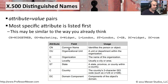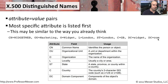For example: common name (CN) is WidgetWeb — so this is a web server. It's in the organizational unit (OU) of Marketing, the organization (O) of Widget, in the locality (L) of London, the state of London, the country of Great Britain. The domain component (DC) is Widget, and the domain component is .com. You can see all the way through how you would access an individual web server in this X.500 LDAP concept.